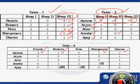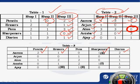Similarly, we can say that Amna must have bought one sharpener from Shop 2. Moving on, since Alish did not buy any article from Shop 3, and there is no pencil sold from Shop 2, therefore Alish must have bought one pencil from Shop 1.